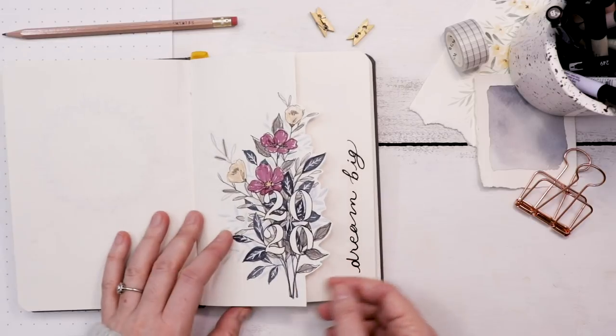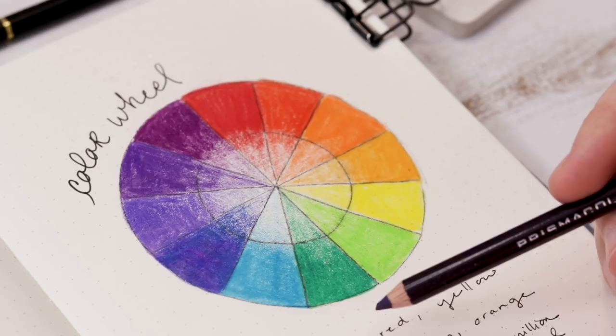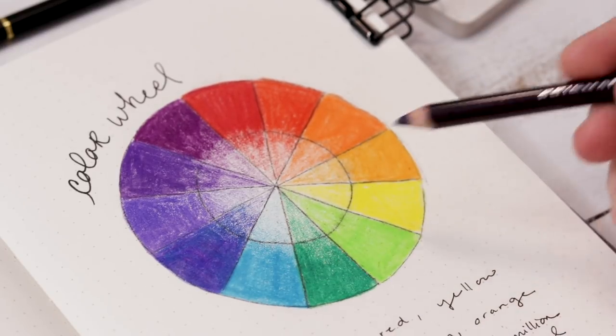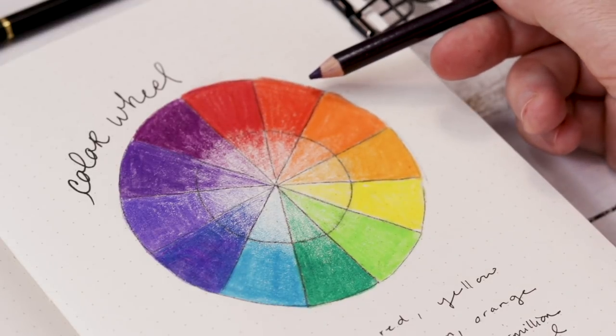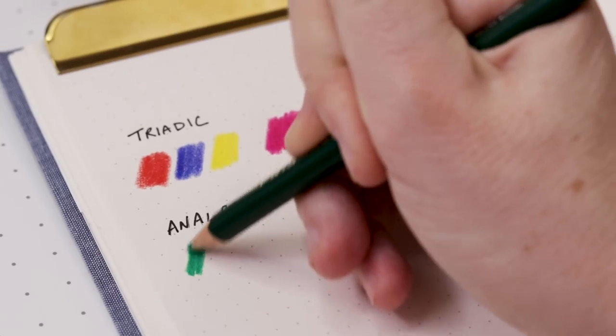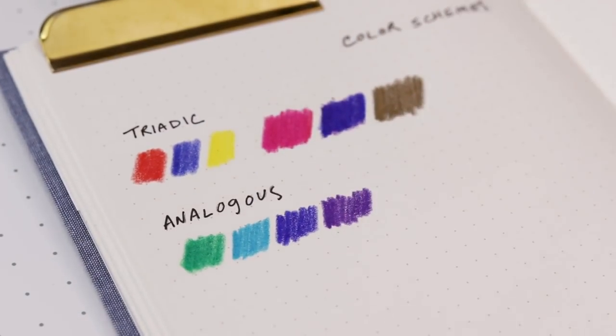Next I want to talk about an analogous color scheme, and that is one where the colors all sit next to each other on the wheel. Could be three, four, or five colors that flow from one to another. One that I use often in my watercolor painting is green through purple: green, blue, purple, maybe a bit of brown.